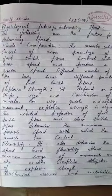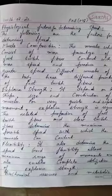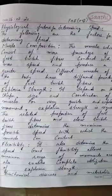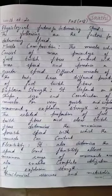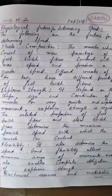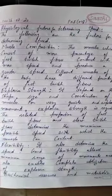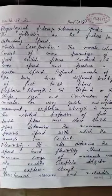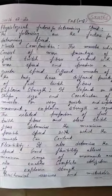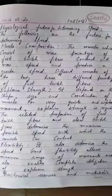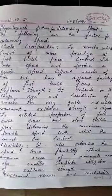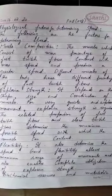The first factor is muscle composition. The muscles which consist of a higher percentage of fast twitch fibers contract with more speed and produce greater speed. Different muscles of the body have different percentages of fast twitch fibers.